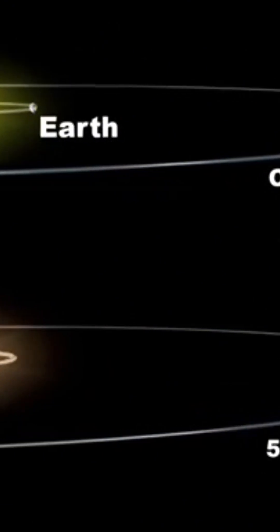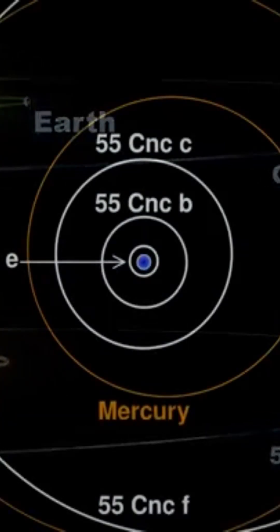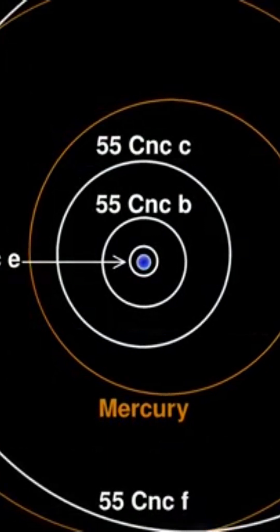Above all, five exoplanets orbit around them, including 55 Cancri e, discovered in 2004.